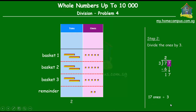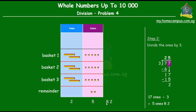Seventeen ones divided by three equals five ones with a remainder of two. Seventeen divided by three gives five. Three times five is fifteen — think of the multiplication table of three. Seventeen minus fifteen equals two. So our final quotient is twenty-five and our final remainder is two. Twenty-five means each basket had two tens and five ones, or twenty-five apples. And from seventy-seven, there were two apples left that couldn't be divided among the baskets.